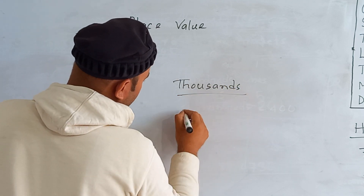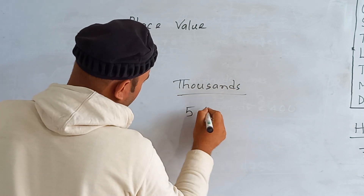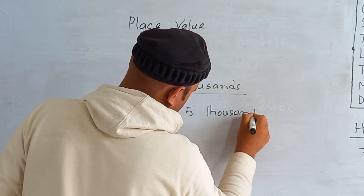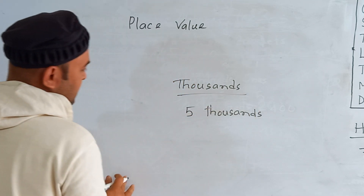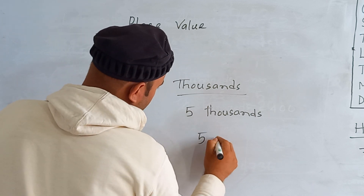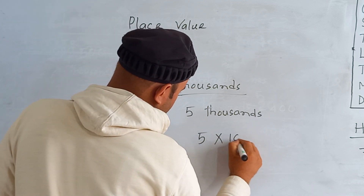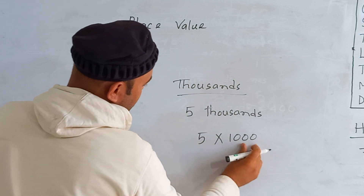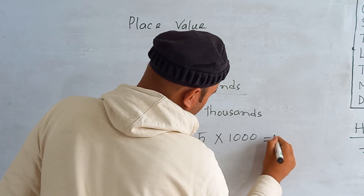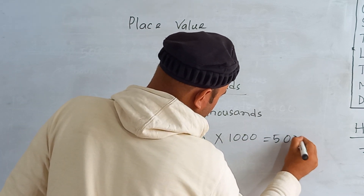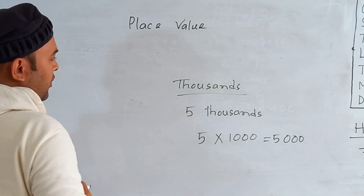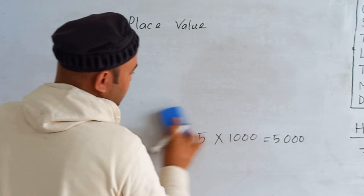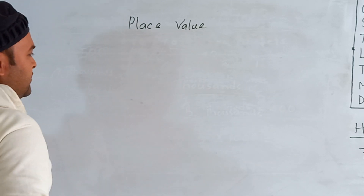Similarly for thousands place: if I write five thousands, then five multiplied by one thousand equals 5000 — we write five zero zero zero. I hope you understood the elaboration of ones, tens, hundreds, and thousands place.